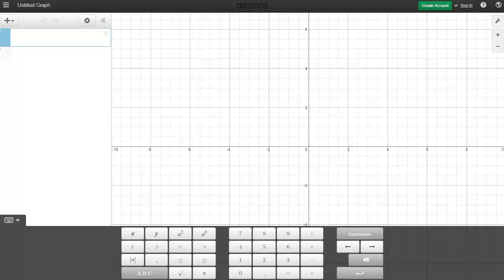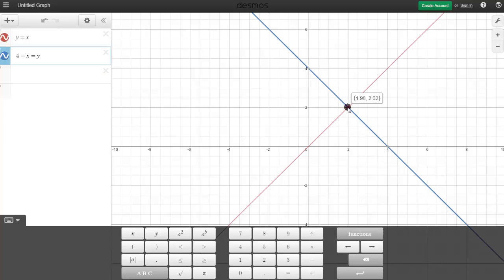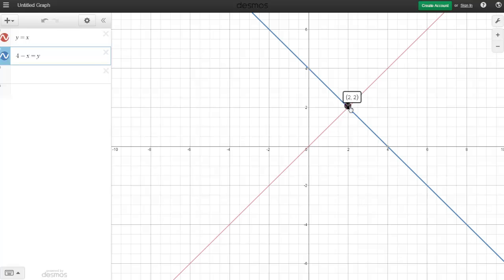So now I'm back in Desmos. I'm going to graph y equals x and hit enter. I also have 4 minus x, which equals y, hit enter. And then the point at which they intersect is going to be the solution. So right here you could see it, 2, 2 is our intersection point. So that's going to be the solution to the system of equations.